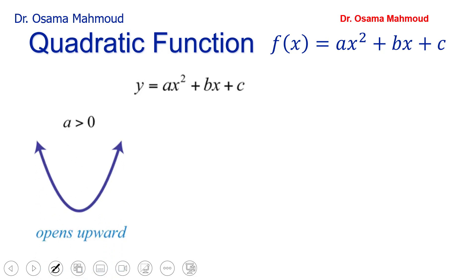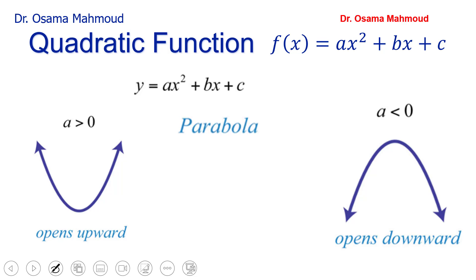If A, the coefficient of X², is positive, your graph will open upward. If A is negative, your parabola will open downward. This shape is called a parabola. So A controls the shape — upward or downward.